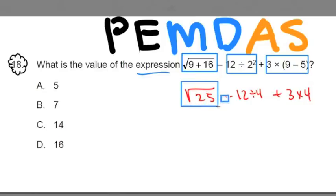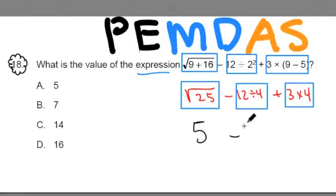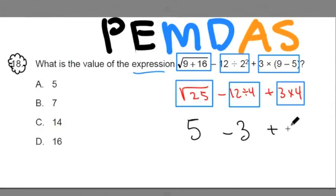We still have a little bit more to do in each one of these sections before we add and subtract these values. Finally, the square root of 25 is 5, minus 12 divided by 4 is 3, plus 3 times 4 is 12.